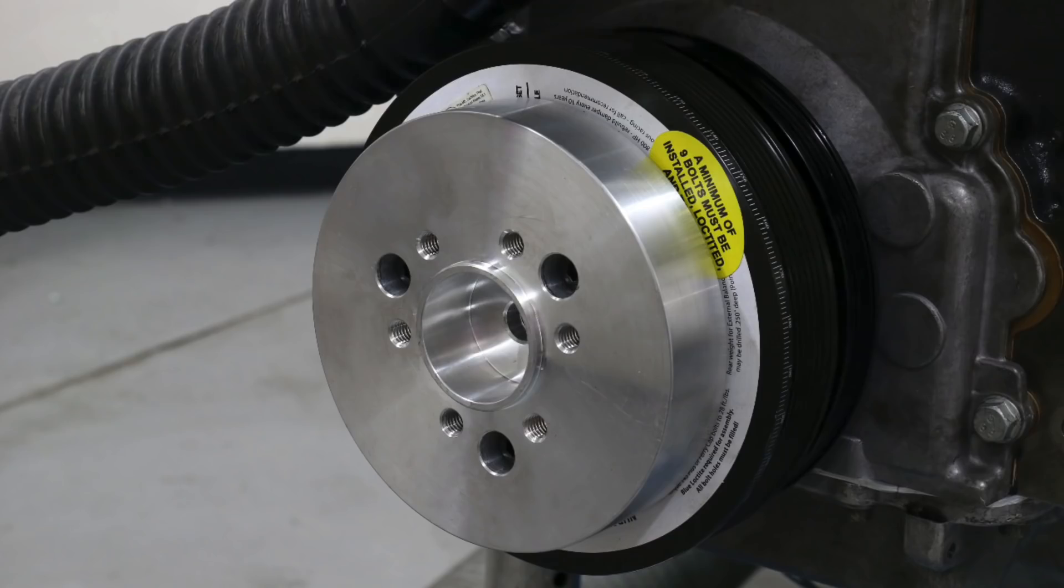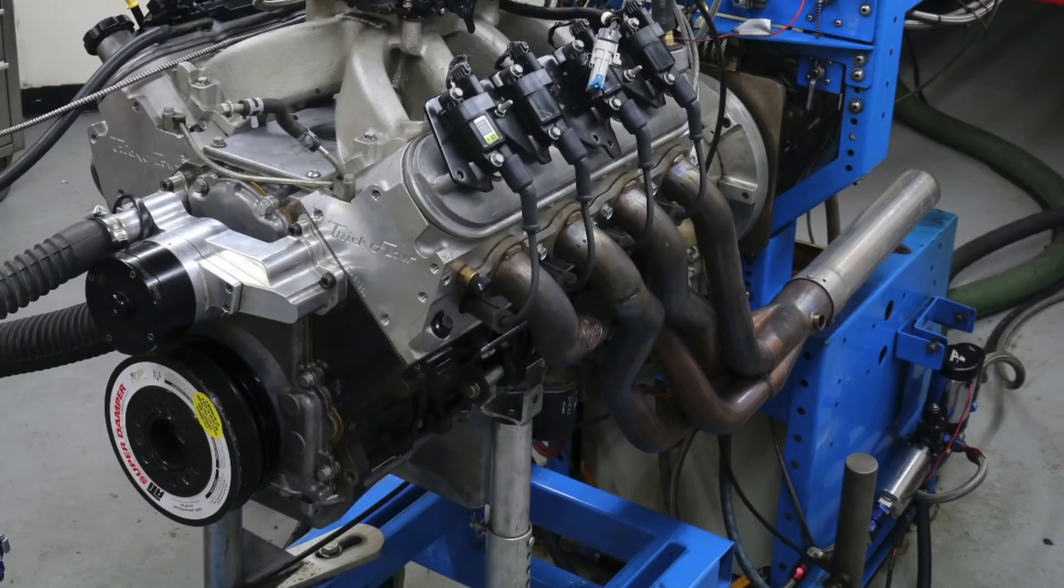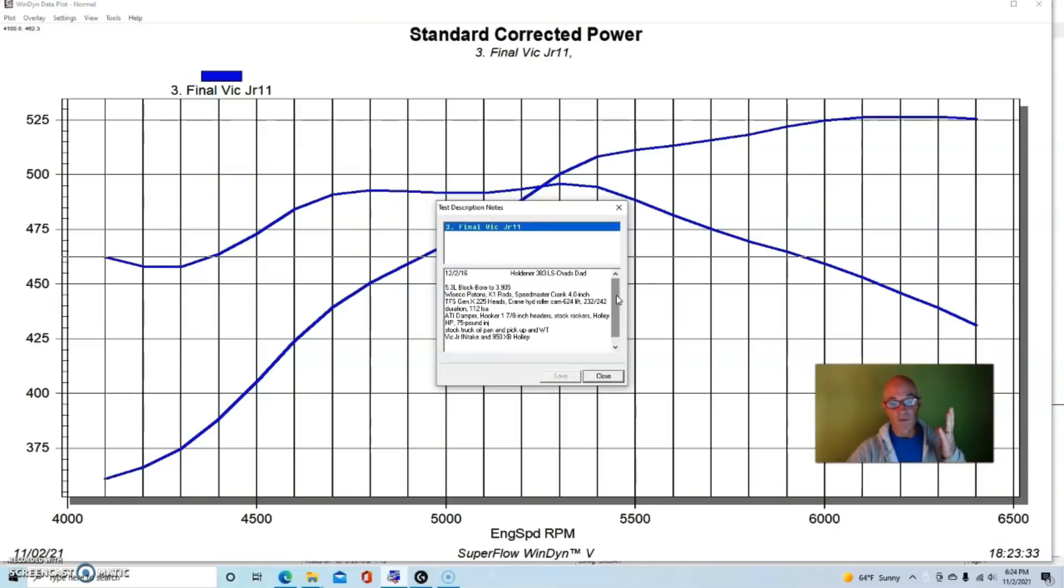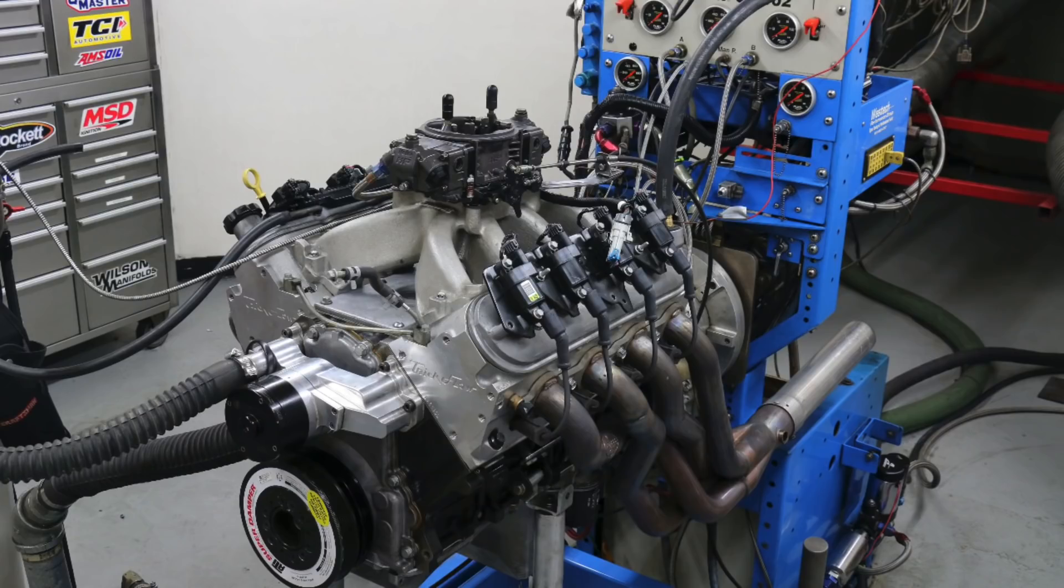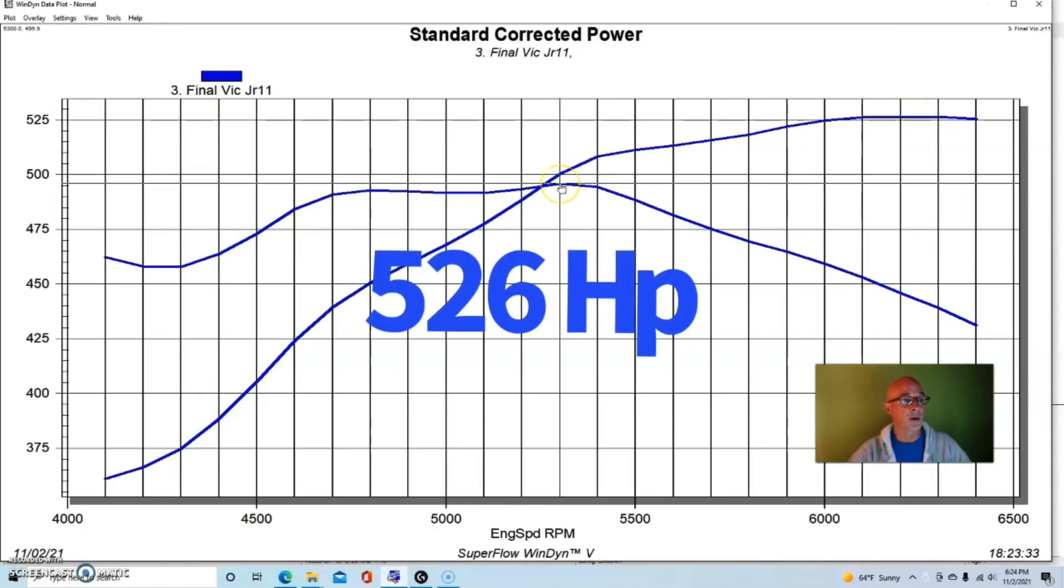Thanks to the guys at ATI for supplying a dampener that we can bolt our pulleys to to drive the blower. Inch and seven-eighths headers, we had stock rockers and we ran an MSD ignition controller on it. We ran it with a Victor Jr and a 950 XP carburetor. We also ran this thing fuel injected but run with a carburetor on our 383 stroker, this thing produced 526 horsepower and 496 foot-pounds of torque.